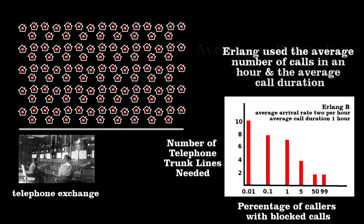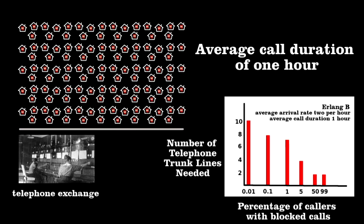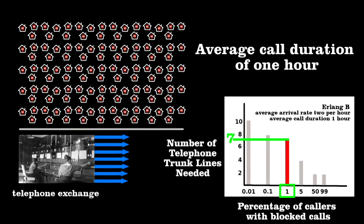To make the calculation simple, I've assumed that Danes like to talk a long time, one hour on the average. Erlang showed that for only one percent of the people to have a blocked call, you'd need to install seven trunk lines.